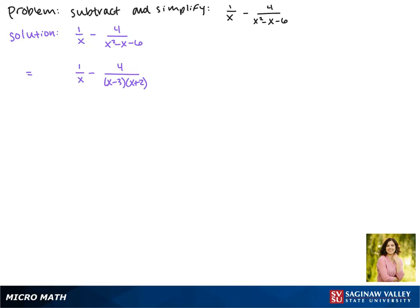So now we want to make a common denominator. The second term needs a factor of x so we'll multiply by that on the top and bottom. The first term needs a factor of x minus 3 and x plus 2 so we'll multiply by that on the top and bottom.